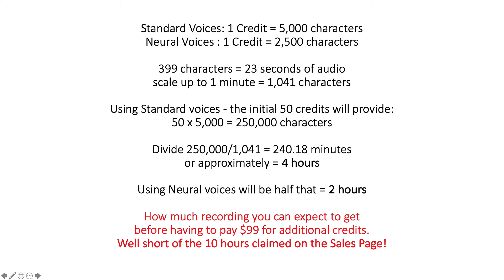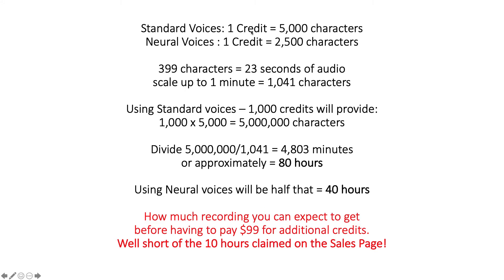So your initial $49 purchase gives you two hours of audio — or four hours if you're using the not-so-good standard voices. Then you'll have to pay for additional credits, which works out as $99 for 1,000 credits. Using the same basis — one credit equals 5,000 characters for standard and one credit equals 2,500 characters for neural — 1,000 credits provides 5 million characters for standard, which divided by 1,041 characters per minute gives us 4,803 minutes — approximately 80 hours. And likewise with the neural, you're getting half the number of characters, so approximately 40 hours.